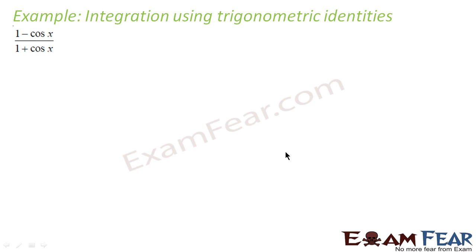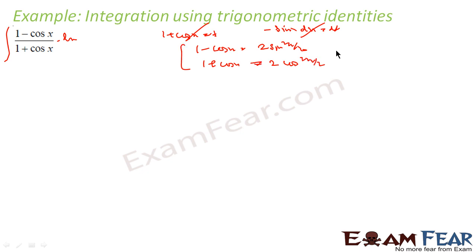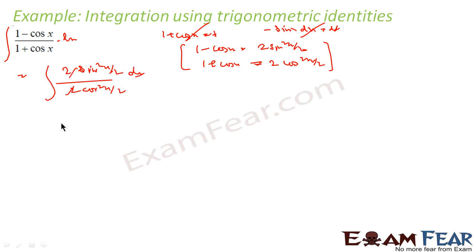Let us take one more example: integrate (1 - cos x)/(1 + cos x) dx. Using substitution is difficult because if we substitute 1 + cos x as t, we get -sin x dx = dt, and we do not have a -sin x component here. So let us apply trigonometric formulas: 1 - cos x = 2sin²(x/2), and 1 + cos x = 2cos²(x/2). This becomes 2sin²(x/2) / 2cos²(x/2) dx = tan²(x/2) dx.